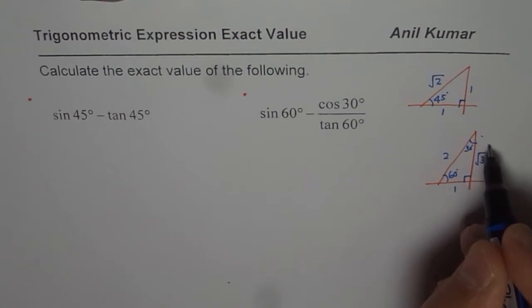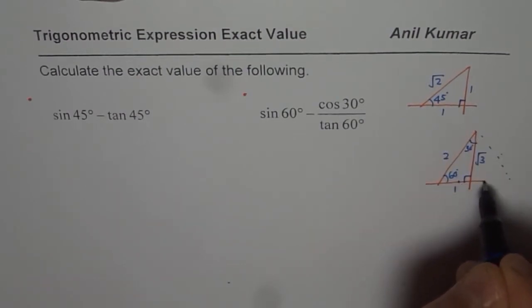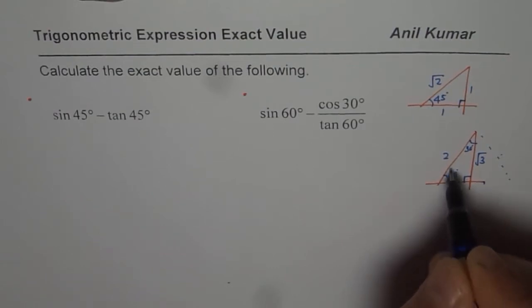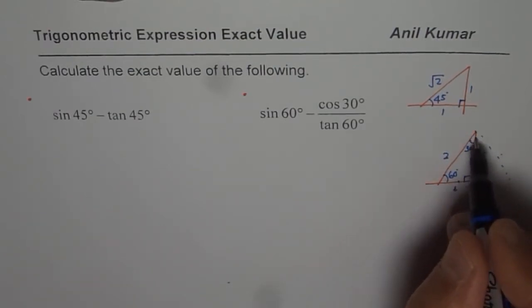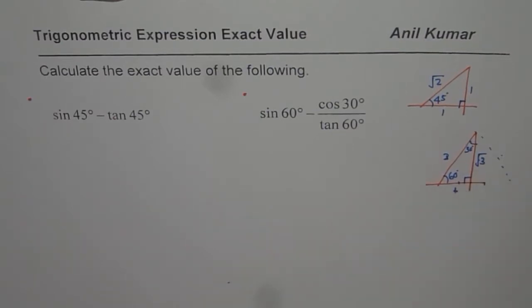Now you could imagine an equilateral triangle of side 2 each. Perpendicular will divide the two sides in equal parts. So we have 1 here. So 2 and 1. And altitude or the height of the triangle is 2 square minus 1 square. That is how you get square root of 3. So that helps you to remember.